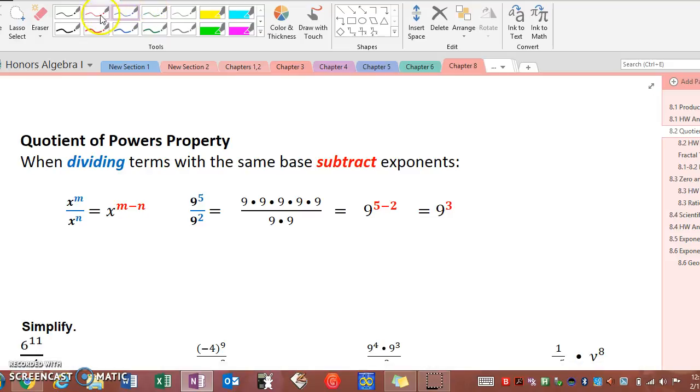If we take a look at our numerical example 9 to the fifth over 9 to the second and we expand it out, we put it in an expanded form. Remember this is exponential form and this is expanded form. Then we can do a 1 to 1 cancellation.